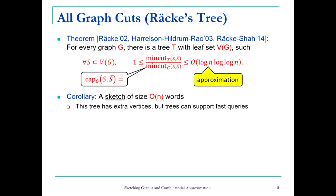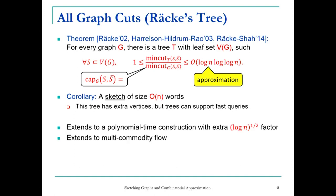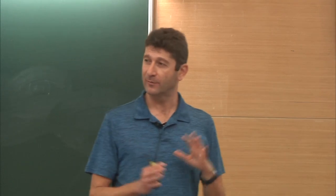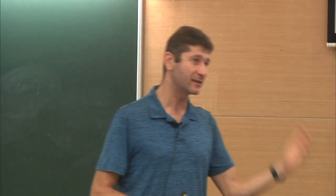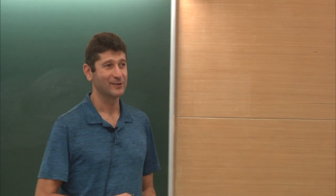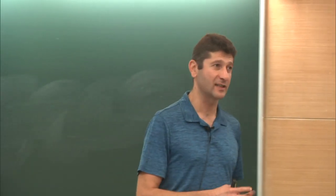Now, this construction is actually non-constructive — it requires solving an NP-hard problem. If you want to implement it in polynomial time, you have to pay an extra √(log n) factor. According to the results we know, you get to pay an extra √(log n). Another thing: it extends to multicommodity flow, which is something that comes up around many of the results throughout the talk today. I tried not to talk about multicommodity flow because it requires more time to define, but I'll mention whether results extend to it or not.